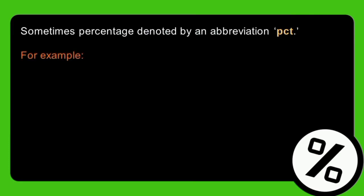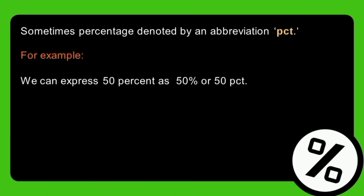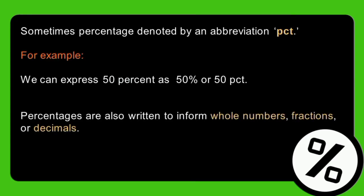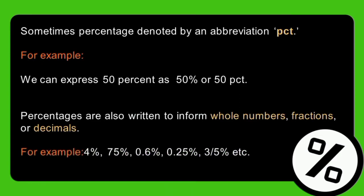Sometimes percentage is denoted by an abbreviation. For example, we can express 50 percent as '50%' with the symbol, or 'pct.' I most prefer using '50%' with the symbol because it's what's commonly used in malls, sales in department stores, food establishments, and so on. Percentage can also be written as whole numbers, fractions, or decimals — for example, 4%, 75%, 0.6%, 0.25%, 3/5%, and so on.